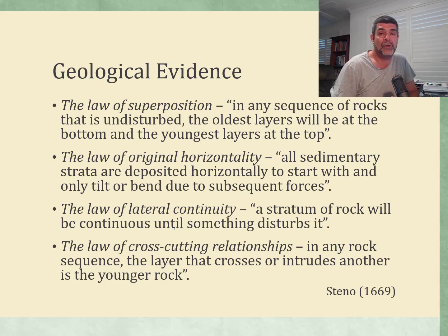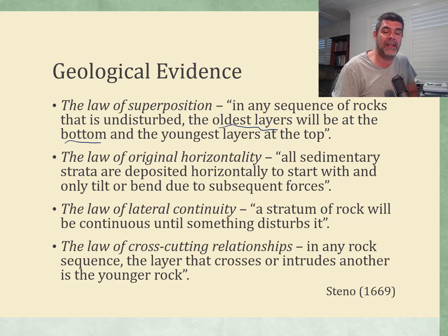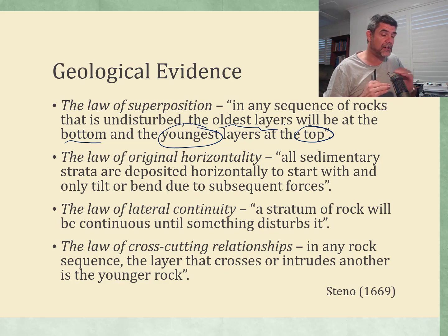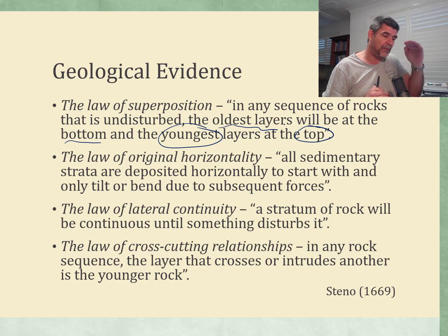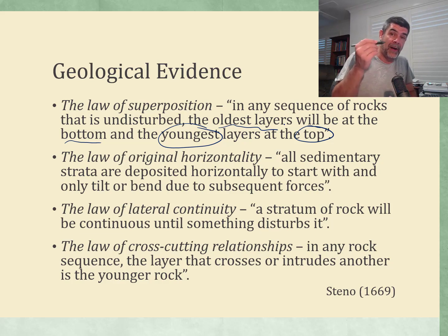The first is the law of superposition, which we've talked about before. It basically says oldest layers are at the bottom and the youngest are at the top. When we see different layers of rock, the law of superposition tells us that whichever ones are at the top will be younger, and those at the bottom will be older. So if we have a sequence, we can do some relative dating based on which rocks are above which others.